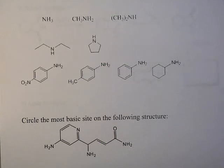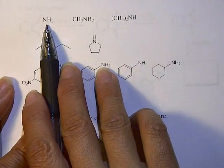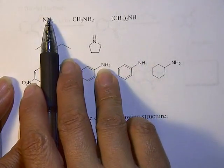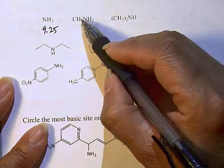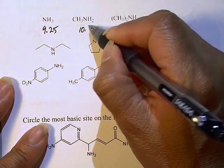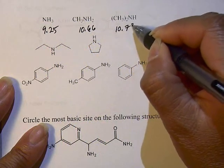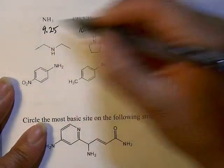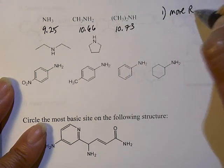All right. So let's look at some of the trends in basicity. And if you look at this trend right here, when you have an amine ammonia, ammonia with no R groups, the pKa is 9.25. If you have one R group is 10.66. And if you have two R groups is 10.73.